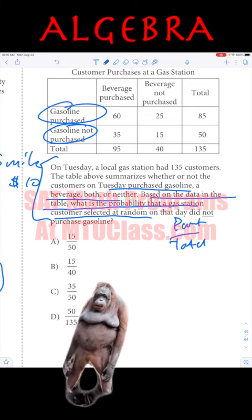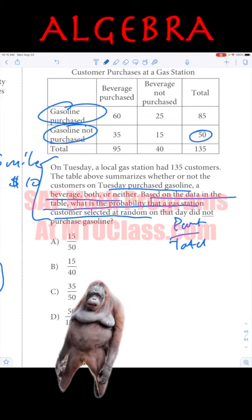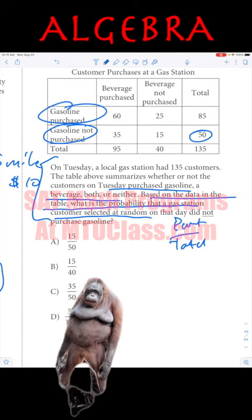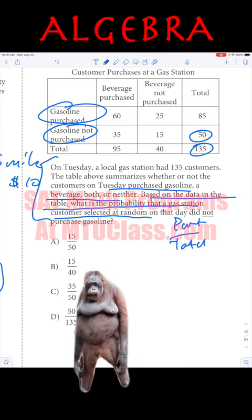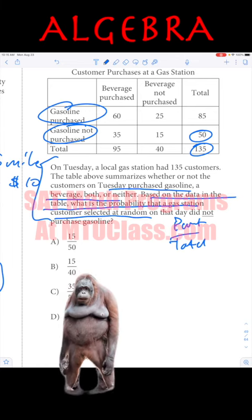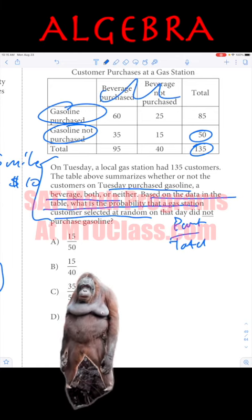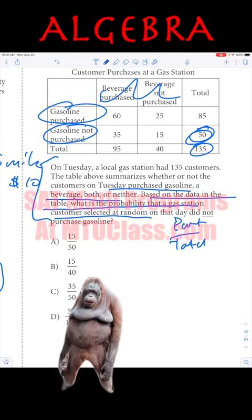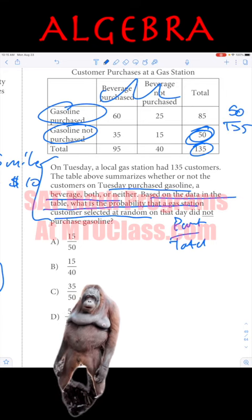Not purchased gasoline. What we have is 50 people that did not purchase gasoline out of 135 total. Now, right now we don't care about the drinks. Okay, forget your beverage. All I know is did not purchase gasoline. That's 50 people out of 135.